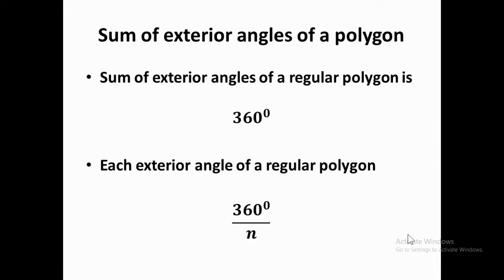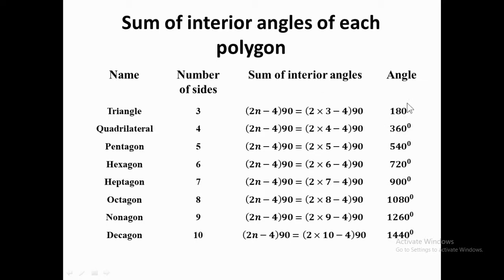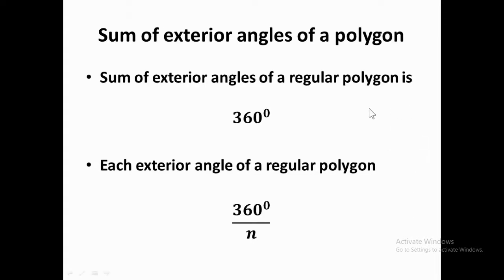Now let's talk about the sum of exterior angles of a polygon. The exterior angle is the angle outside the polygon, and the number of sides determines how many exterior angles there are. Notice that the sum of interior angles differs — 180, 360, 540, 720 — but the sum of exterior angles of any regular polygon is always 360 degrees, whether it's a triangle, octagon, nonagon, or decagon.